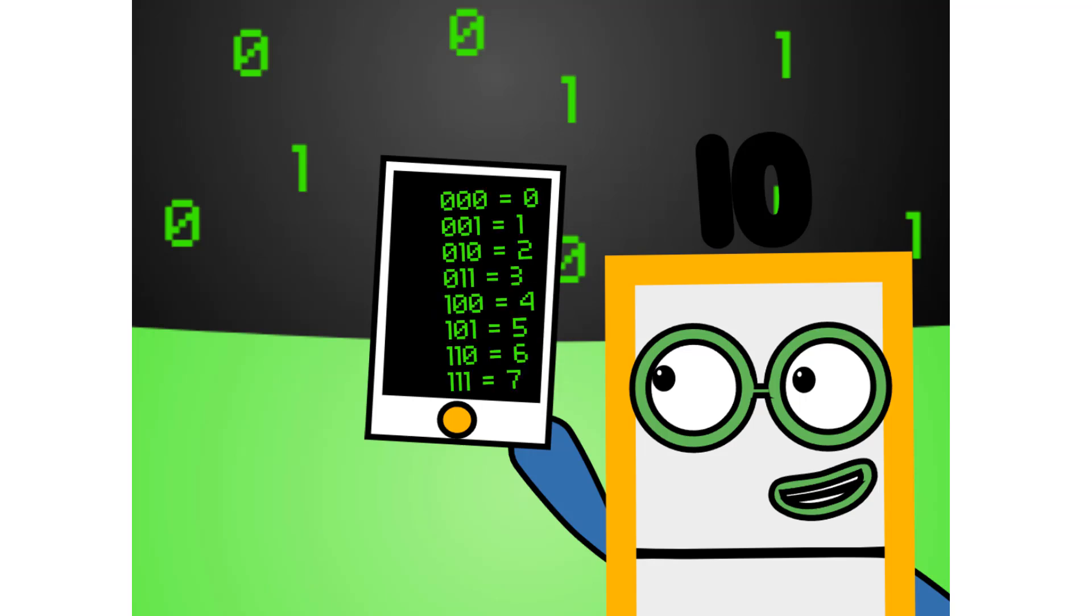There are 8 different combinations of 3-digit numbers in binary. This means that binary can easily be coded into octal. There are also 16 different combinations of 4-digit numbers in binary. This means that binary can easily be coded into hexadecimal too.